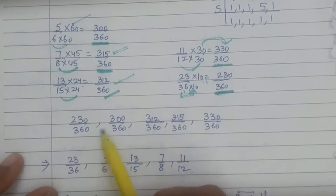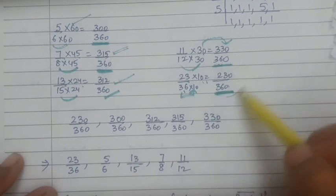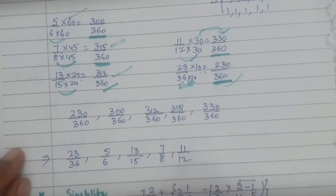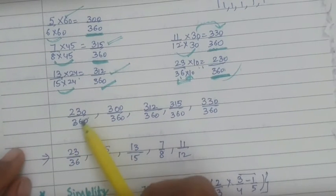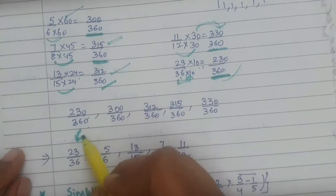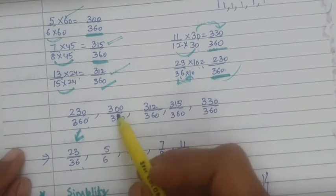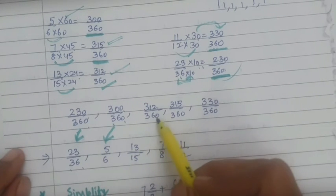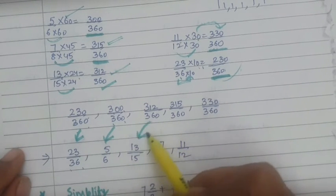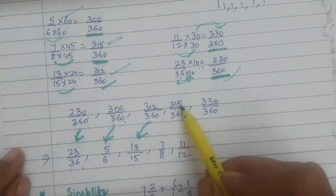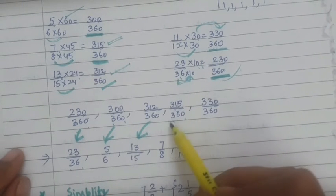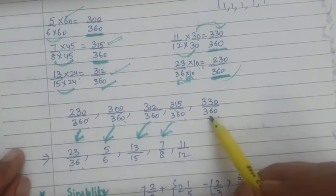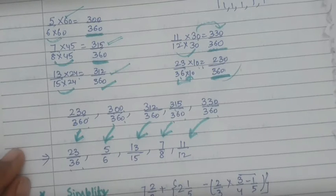If we have to write all these fractions in ascending order, that means smaller to bigger. So it will be: 230 upon 360 which corresponds to 23 upon 36, then 300 upon 360 that is 5 upon 6, then 312 upon 360 that is 13 upon 15, then 315 upon 360 that is 7 upon 8, and 330 upon 360 that is 11 upon 12. Clear?